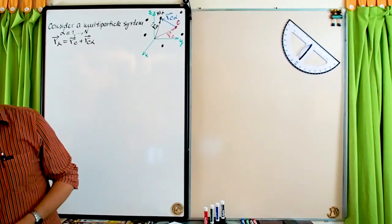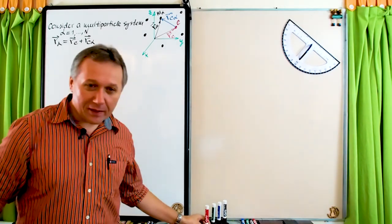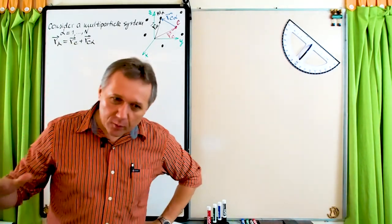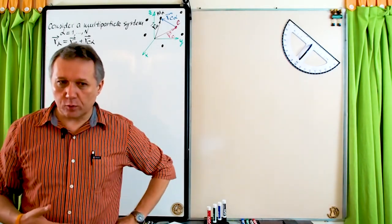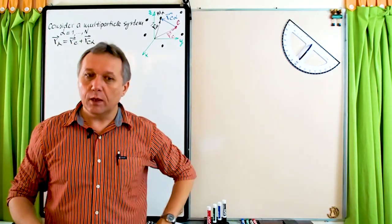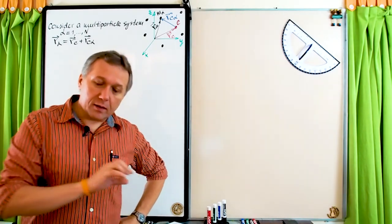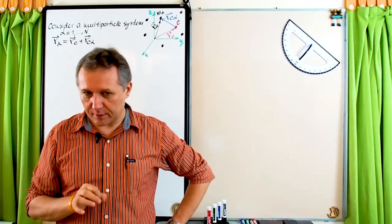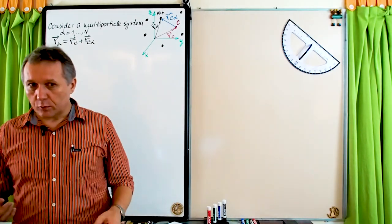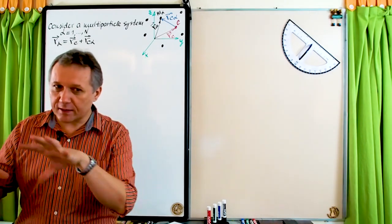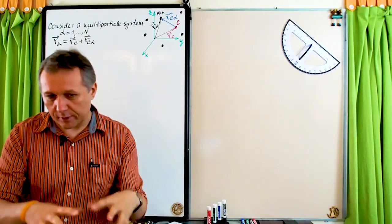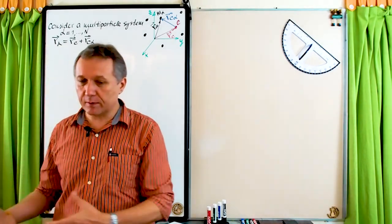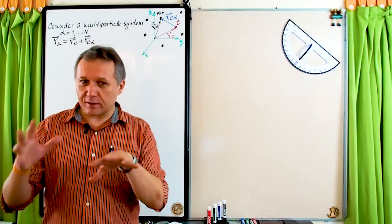Let's understand where we are and where we're going. In the first lecture, we introduced the foundation — in any theoretical course, you need to lay down the foundation, and based on that, the whole castle of the theoretical course can be built. From that foundation, we moved to the multi-particle system, saw the beauty of Newton's third law, and then applied those results to derive the rocket equation.